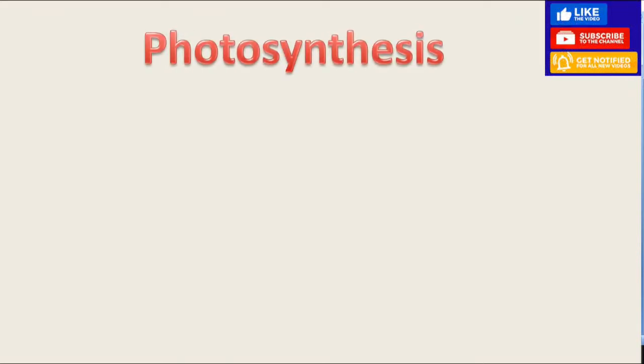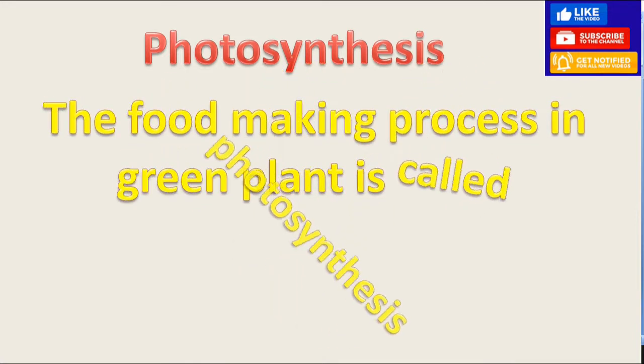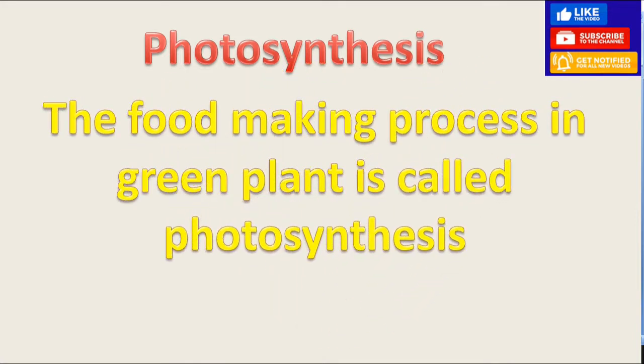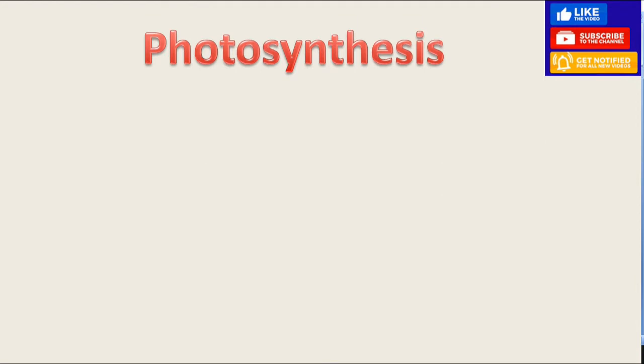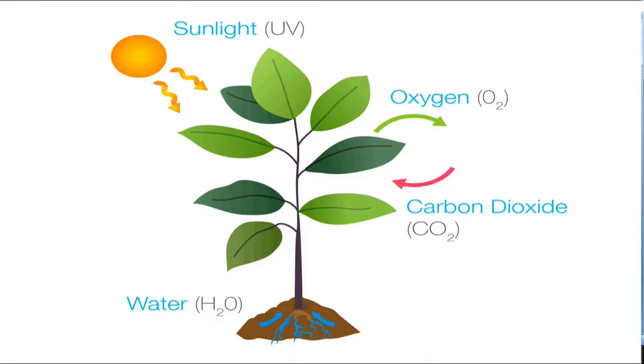Photosynthesis. The food making process in green plants is called photosynthesis. Plants prepare food in presence of sunlight. This process is known as photosynthesis.